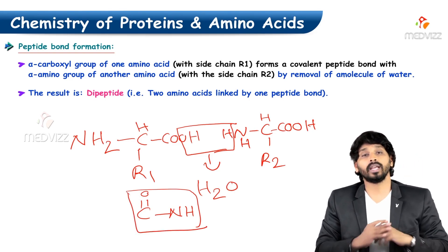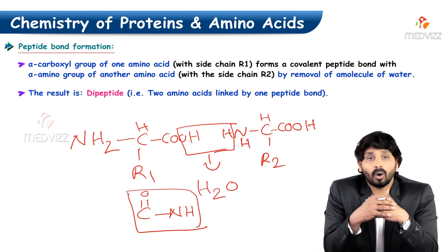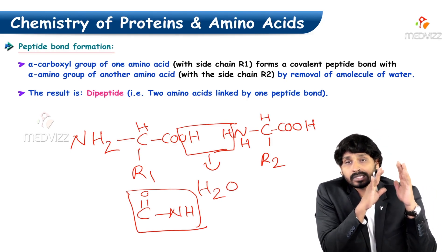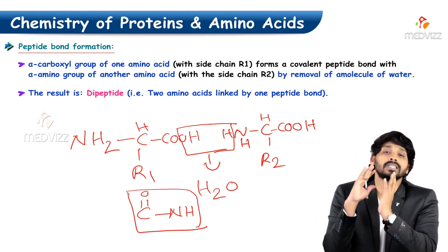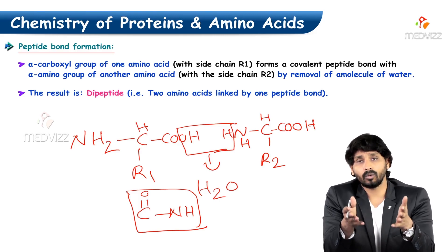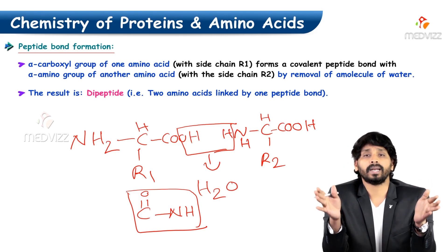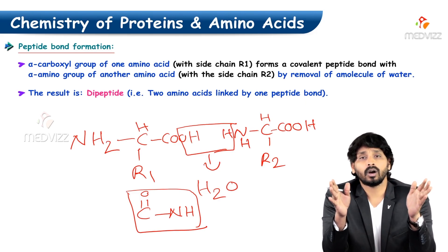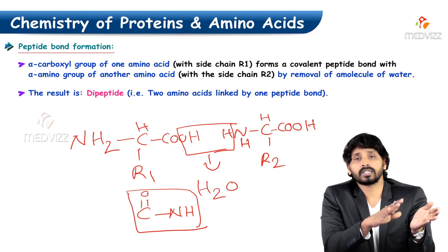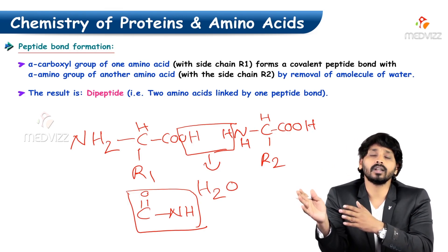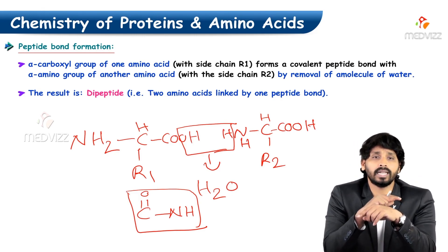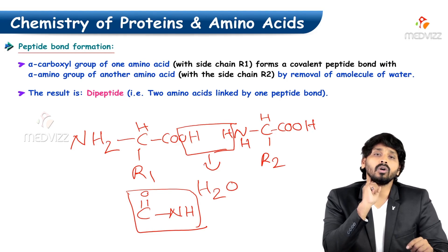What you get after water removal is C double bond O — NH, which is the peptide linkage. The carboxylic group of the first amino acid and the amino group of the second amino acid are linked together by eliminating a water molecule to form a peptide linkage. The hydroxyl from the carboxyl group and the hydrogen from the amino group join together, removing water.